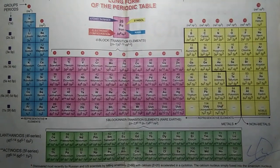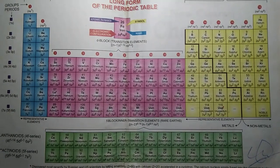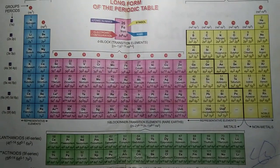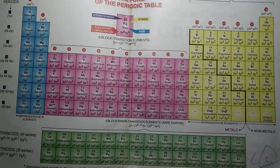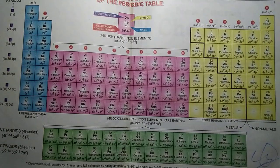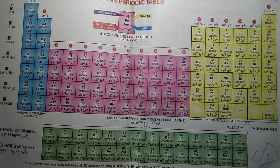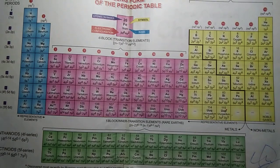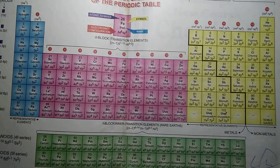Next, in group 2, the elements are beryllium, magnesium, calcium, strontium, barium, and radium. You can learn these with a mnemonic starting with 'Beta' for beryllium, where each element has its own word to remember.